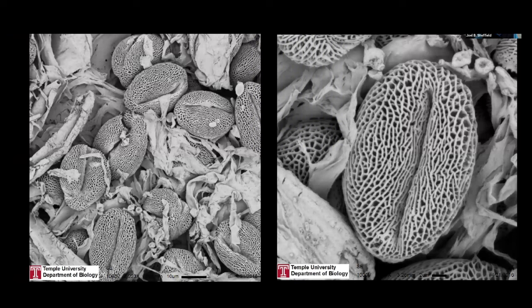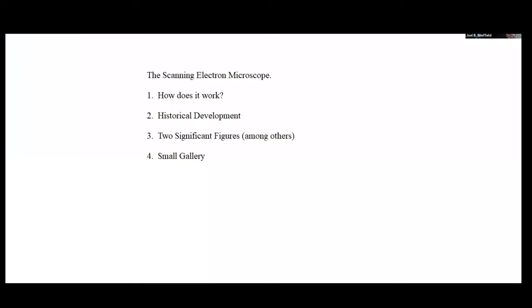So what we're going to be talking about today is the scanning EM. These are a couple of images of pollen grains. The question that I want to go through is to start looking at the history of this instrument by starting with how it works, because it's something not quite as obvious as the transmission microscopes that we've been looking at. So I want to cover that, then talk a little bit about the history of how it evolved, and then talk about two people who were significant figures in the development of the microscopes. And then I'll end up with a small gallery of pictures just to show you what kinds of things can be done.